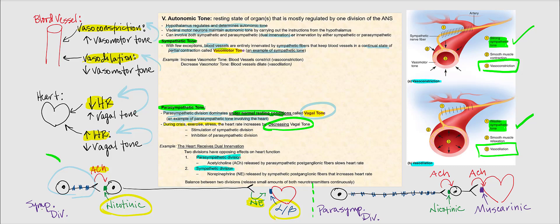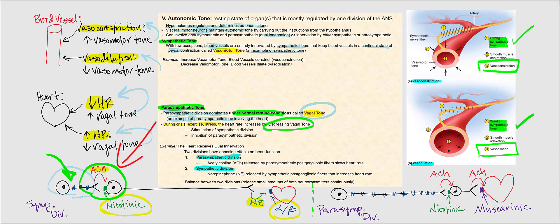The axons of the sympathetic pre-ganglionic neuron are found in the sympathetic nerve, because the visceral effector is the heart. The synapsing between the sympathetic pre-ganglionic neuron and the sympathetic post-ganglionic neuron occurs at the sympathetic chain ganglion.